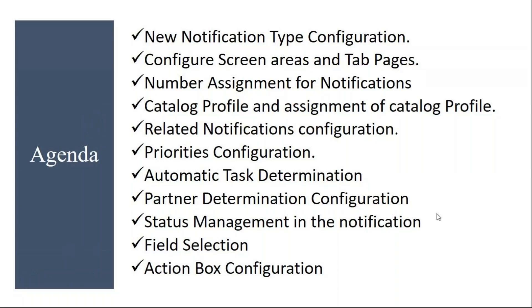The topics we are going to cover: we will see how to create a new quality notification type and new notification type configuration. Then, configure screen areas and tab pages — when you create the quality notification, you see some tabs with some sub-screens, so how to configure them we will see. Then, number assignment for notifications: when you create a notification and save, the system will assign a unique number, and how to do that number range configuration.